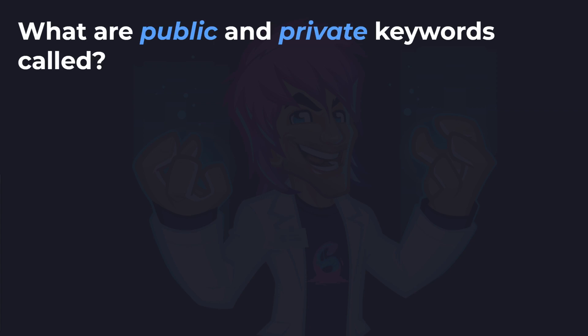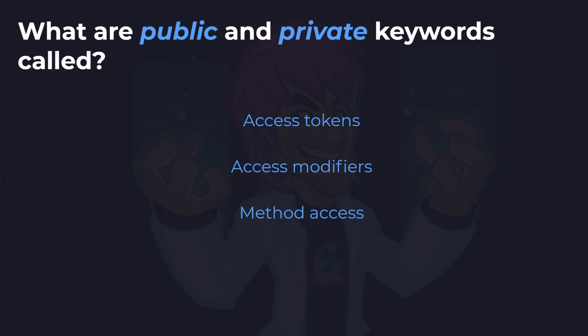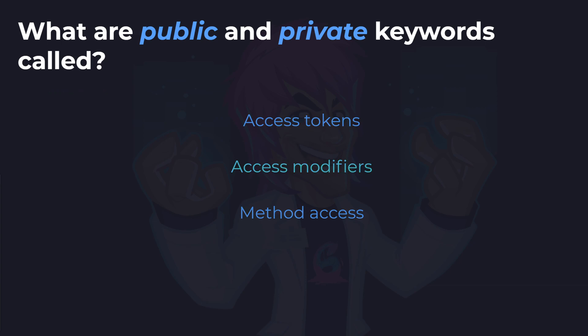Next up: what are the public and private keywords called? Are they access tokens, access modifiers, or method access? These are the things at the start of the method when we declare a method, and you can specify various things — public, private, static. And the answer is access modifiers.